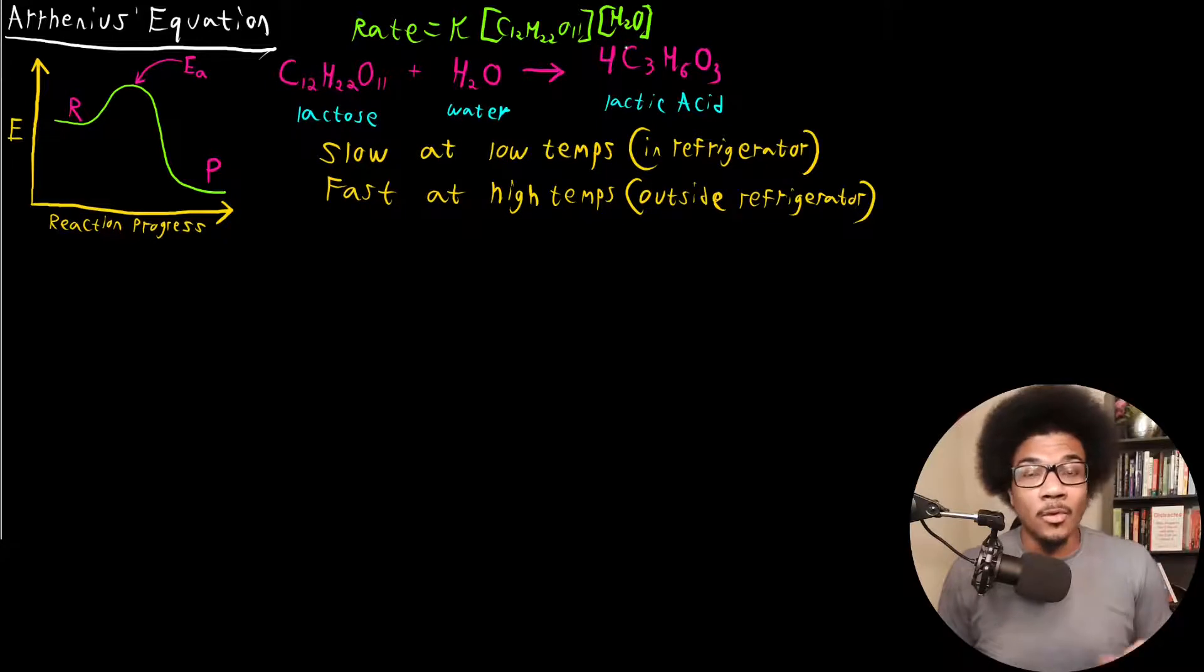That's where our Arrhenius equation comes in. It allows us to be able to define the temperature dependence of chemical reactions by relating it to the activation energy and the rate constant. So what is our Arrhenius equation? The Arrhenius equation is expressed in a couple of different ways. The first is that you can express it as the rate constant K equals a constant A that I will talk about more in just a second, times E to the negative E sub A over RT.